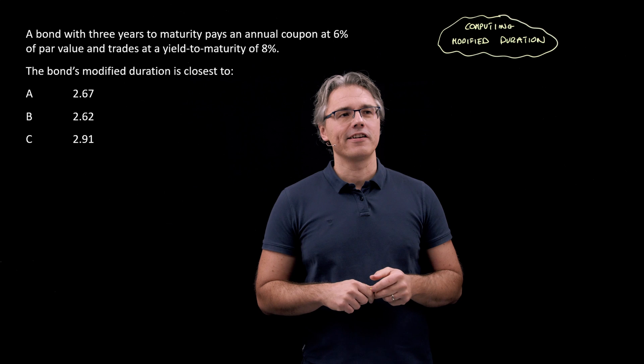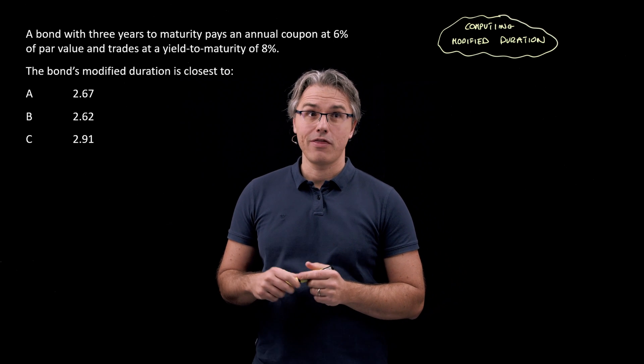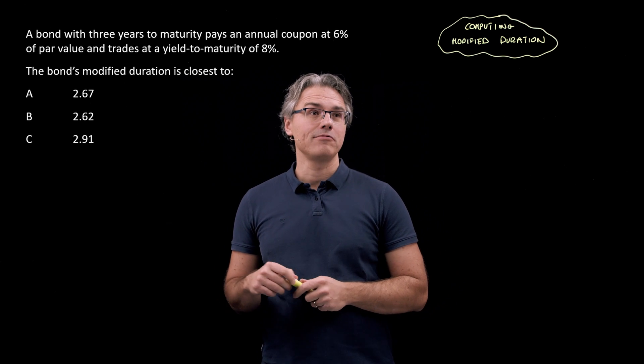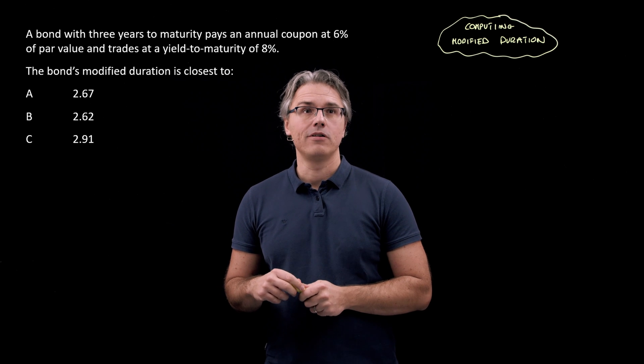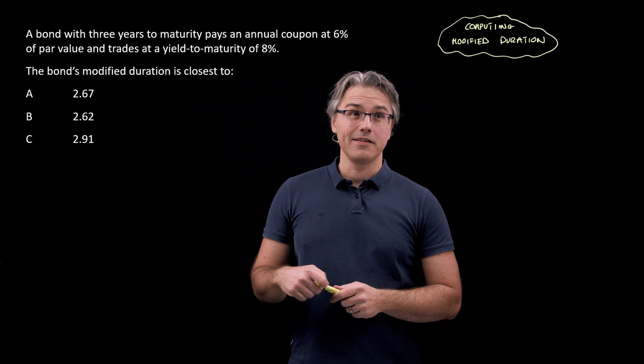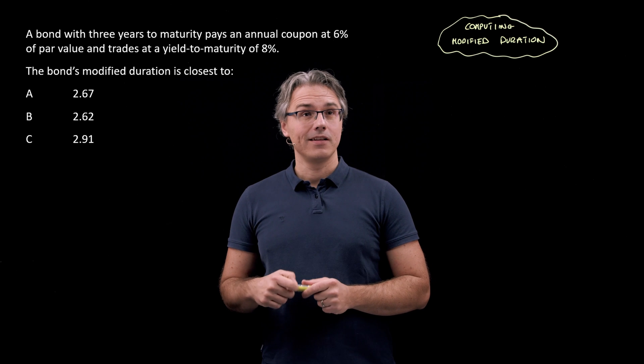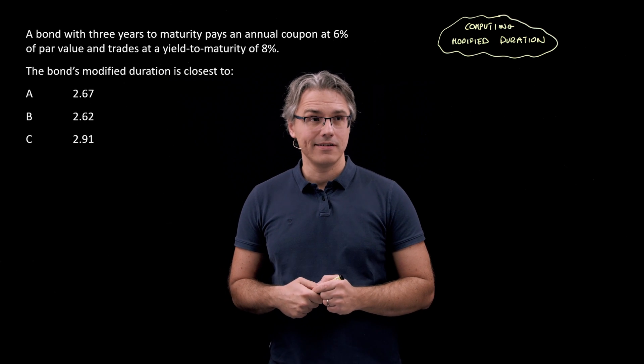So this is the question which I want us to have a go at. A bond with three years to maturity pays an annual coupon at 6% of par value and trades at a yield to maturity of 8%. The bond's modified duration is closest to.